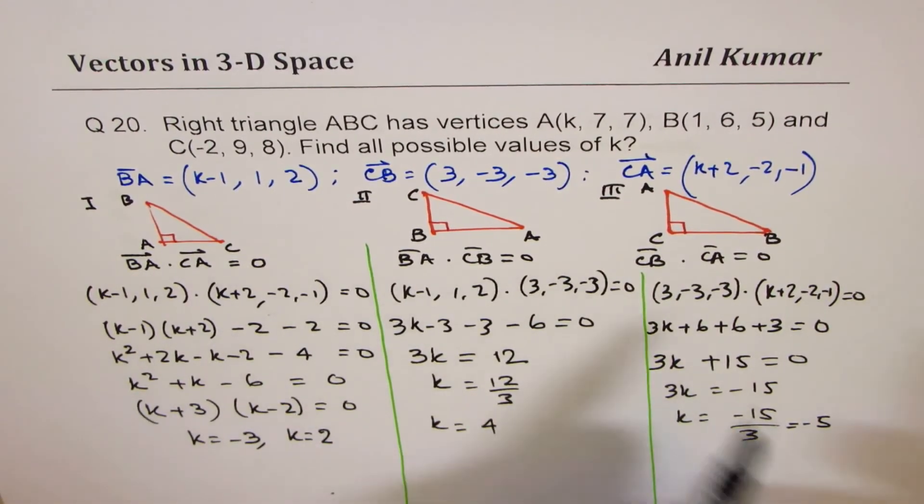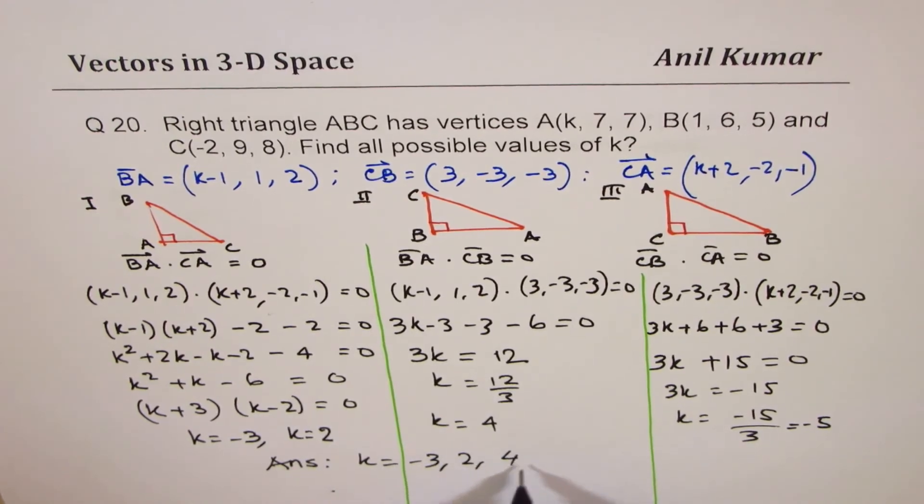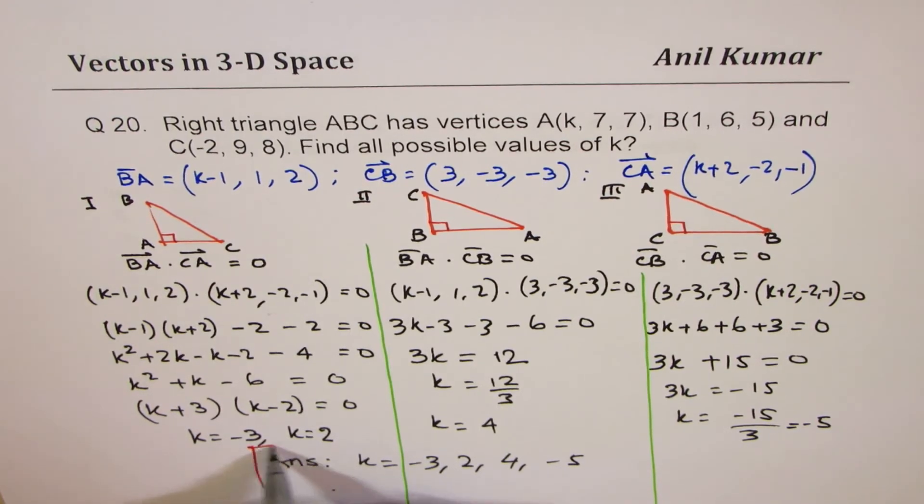So depending on the scenario, these are possible values of K, and so we write down our answer as K equals to minus 3, it could be 2, it could be 4, it could be minus 5. So these are all the solutions for the given question.